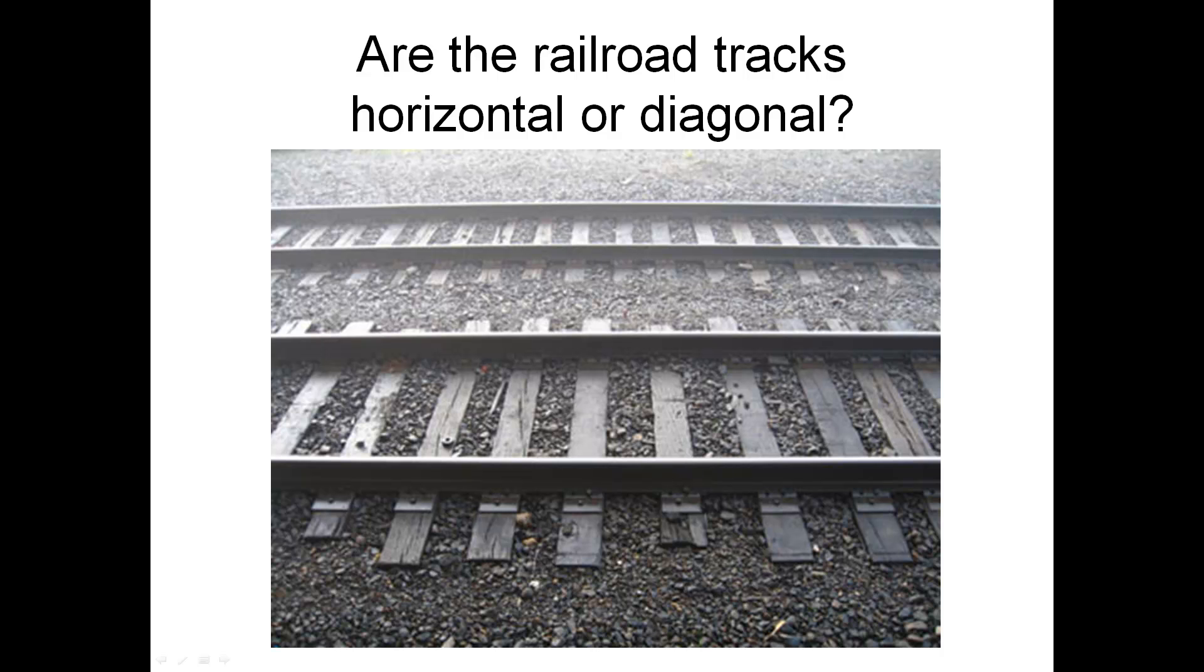Are the railroad tracks horizontal or diagonal? They're horizontal, aren't they?